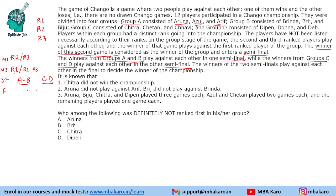We are given some additional information: Chitra did not win the championship. Aruna did not play against RF. Bridge did not play against Brinda. The third key statement is that Aruna, Biju, Chitra and Deepin played 3 games each. Now, how can a person play 3, 2 or 1 game?